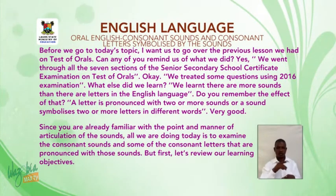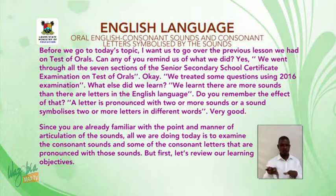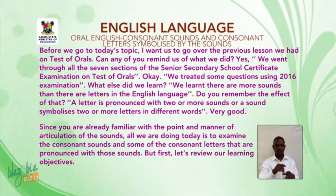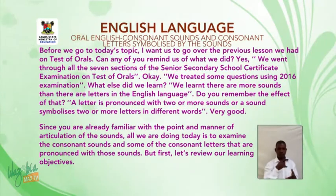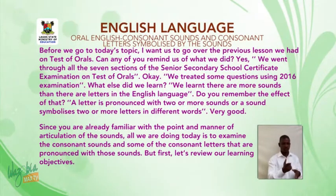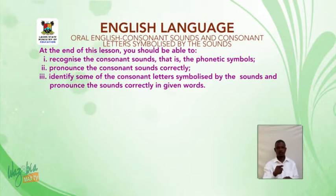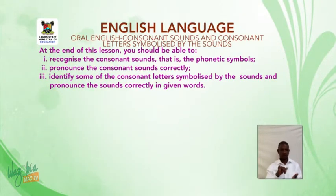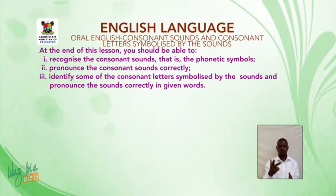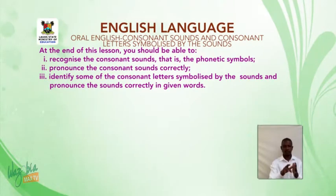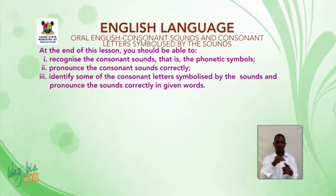Since you are already familiar with the points and manner of articulation of the sounds, all we're doing today is to examine the consonant sounds and some of the consonant letters that are pronounced with those sounds. At the end of this lesson, you should be able to: one, recognize the consonant sounds — that is the phonetic symbols; two, pronounce the consonant sounds correctly; three, identify some of the consonant letters symbolized by the sounds and pronounce the sounds correctly in given words.